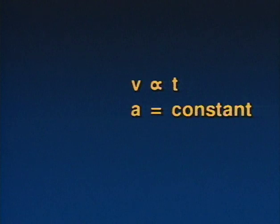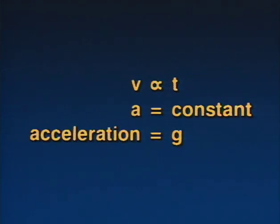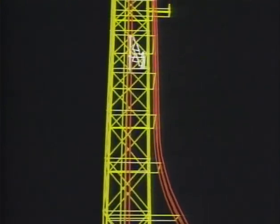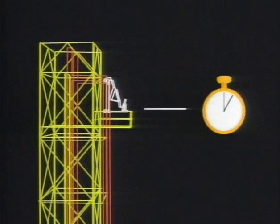The distance S keeps increasing since it depends on time — if T changes, S changes. The speed V also keeps increasing with time. But acceleration A doesn't depend on time at all; regardless of the value of T, the acceleration is always the same. On the Earth, the acceleration of a falling object in a vacuum is equal to 9.8 meters per second squared. Because the acceleration due to gravity is so important, it has its own symbol: a small g. According to the law of falling bodies, a body falls with constant acceleration, with speed proportional to time, and falls a distance proportional to the square of time.